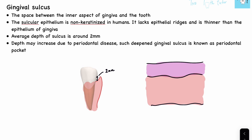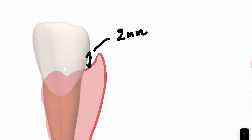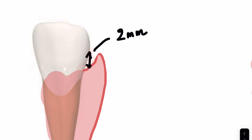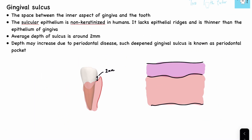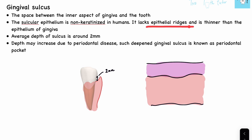The gingival sulcus is the space between the inner aspect of the gingiva and the tooth. This space — you can see it here if I zoom in — is called the gingival sulcus. The sulcular epithelium is non-keratinized in humans. It lacks epithelial ridges and is thinner than the epithelium of the gingiva.